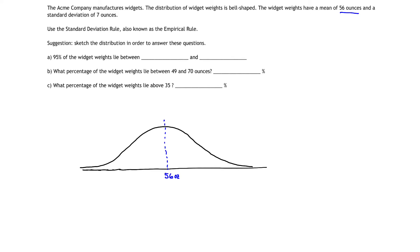My standard deviation is 7 ounces, so 7 ounces away from 56 gives me my first standard deviation, which is at the inflection point. Taking 56 and adding 7 gives me the first standard deviation position marker at 63 ounces. Adding another 7 gives 70 ounces, and then the next marker is at 77 ounces.